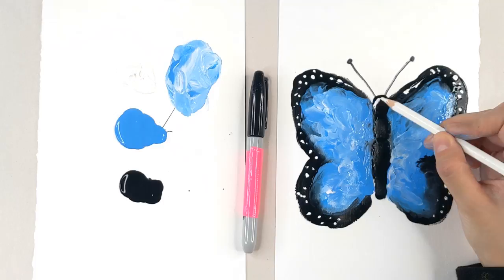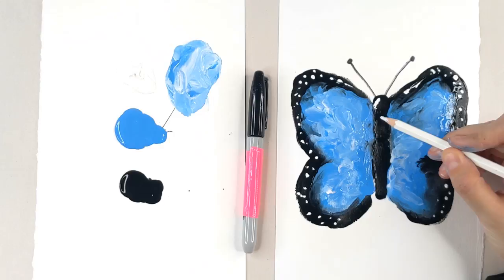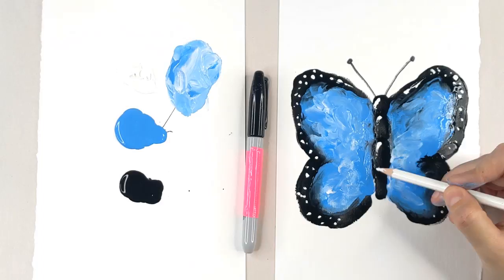Alright, let's throw a little bit of highlight onto this body. So a little bit of white on the head. Let's separate these parts. A little bit of thorax and a little bit of the abdomen like so. And I'm going to take the black.